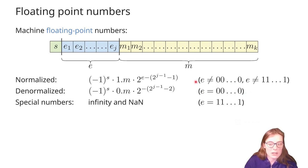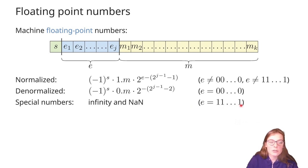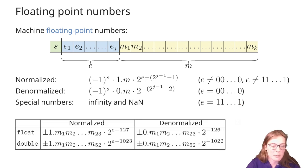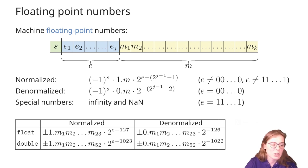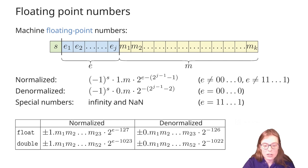The first one is called a normalized representation. The floating point number is given by a specific expression where J is the number of bits representing the exponent. There is also a denormalized representation of a number. The difference with a normalized representation is we have the value 0 before the floating point. A computer can recognize when a number is stored using denormalized representation by checking when all the bits of the exponent are 0.